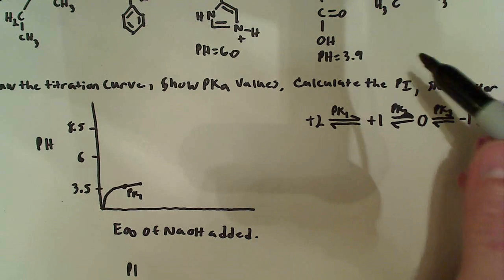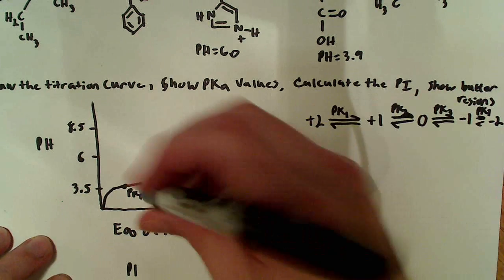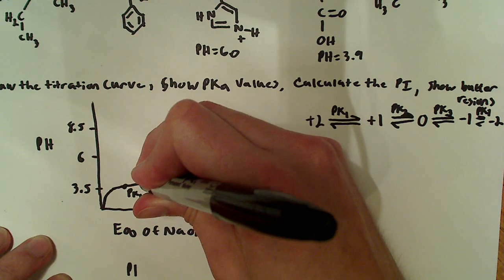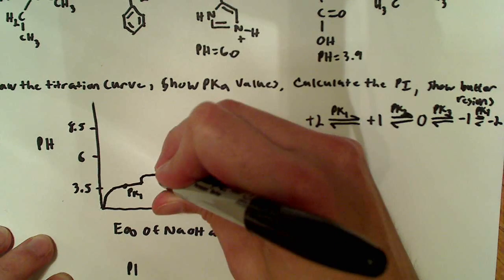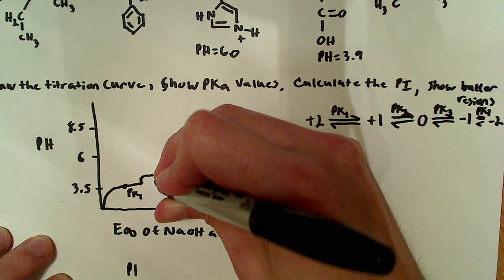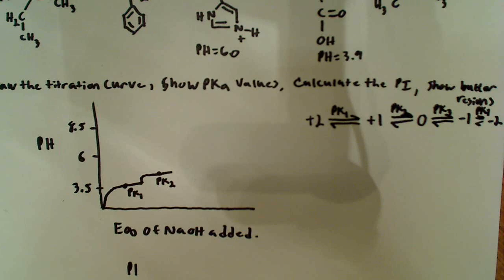Now the second group to lose a proton is at 3.9 over here. So it's going to be a very small jump like that, and then flatten out. And we'll mark that spot there, and that will be our pK2.